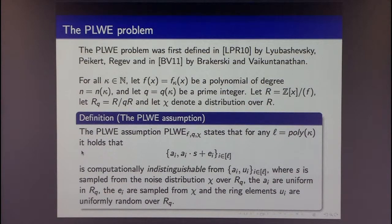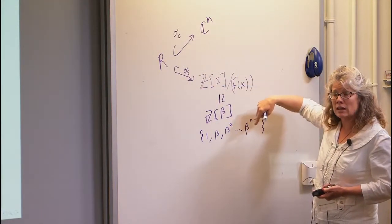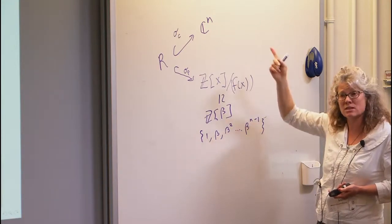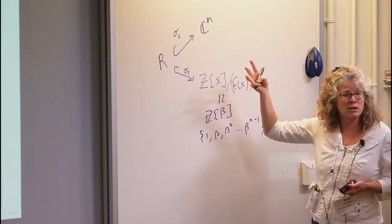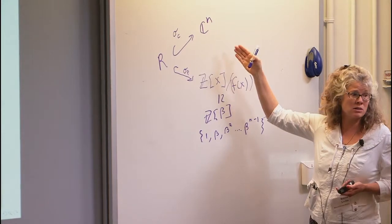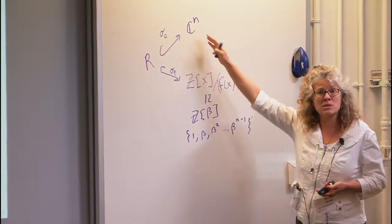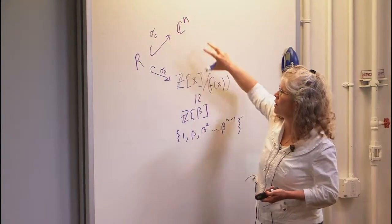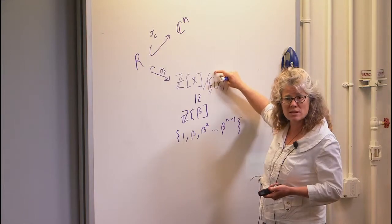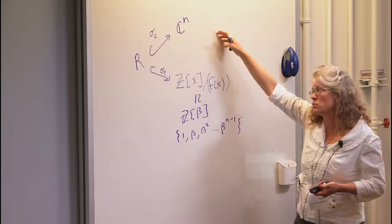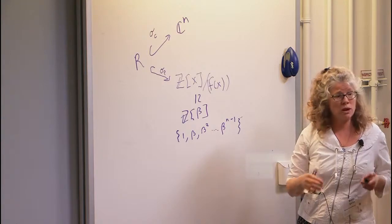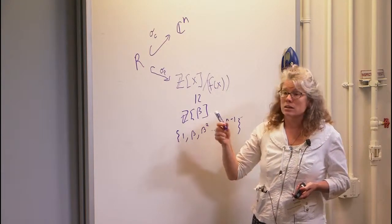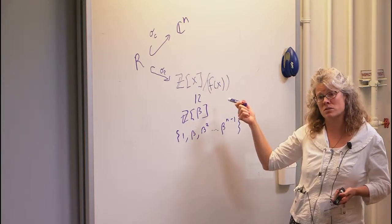You might ask: why not just generate the error where you're supposed to and push it over? One answer is that's expensive. Another is that if you stick to two-power cyclotomic fields, it doesn't matter — there's an isometry, an orthogonal scaled matrix, that maps one basis to the other, so the distributions are the same. The moral of the story is that the clearly safe thing to do is to stick to two-power cyclotomic fields.